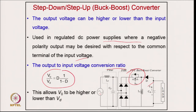The input-to-output voltage ratio gives the relation: output voltage = D/(1−D) × input. If the duty cycle D is below 0.5, that gives buck operation. If D is above 0.5, it gives boost operation. At D = 0.5, the input and output voltages are equal.